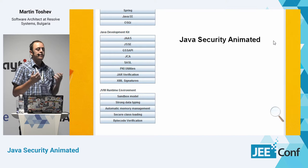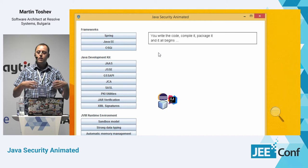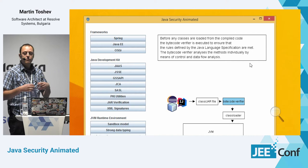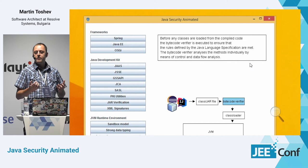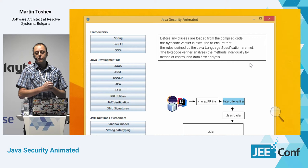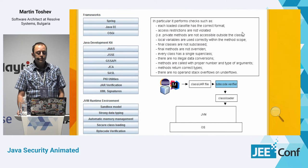Since nobody is familiar with the SecurityManager, we'll do a recap on how the security sandbox model in Java works using the tool. Starting with a very basic application — you write your code, package it, use an IDE to develop your application and run it for testing. The first thing that happens before any classes are loaded in the JVM is bytecode verification, which makes sure the bytecode follows the Java language specification. The bytecode verifier analyzes methods individually by means of control and data flow analysis.